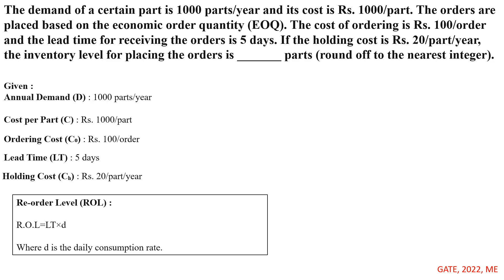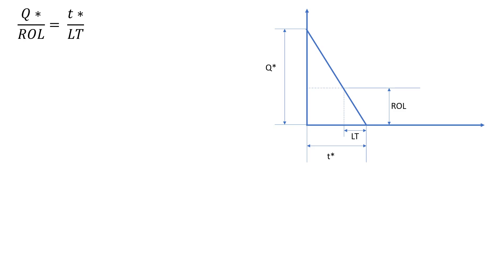The reorder level formula is: ROL = lead time × daily consumption rate (small d). If you don't remember this formula, we can solve for ROL by applying the EOQ concept using similar triangles. On the inventory diagram, Q* and T* form two symmetrical triangles with the ROL and lead time, so we can write: Q* / ROL = T* / LT.